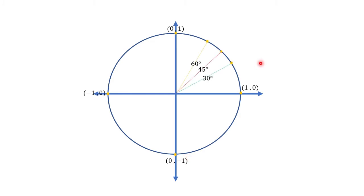Now, we're going to identify the coordinates of these points on the unit circle with these angles in standard position — that would be 30 degrees, 45 degrees, and 60 degrees.